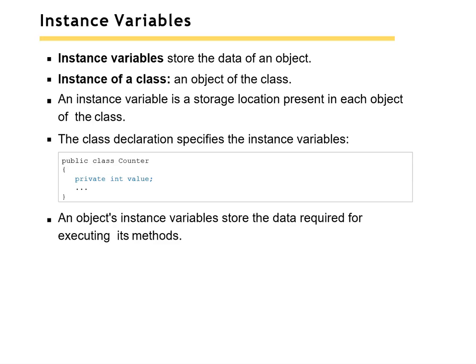An instance variable is a storage location present in each and every object of the class. The class declaration specifies these instance variables. For example, here we have an integer declared as value, declared as type integer. An object's instance variables store the data required for executing its methods — basically they're like local variables in a method, but they are available to anything in that class.